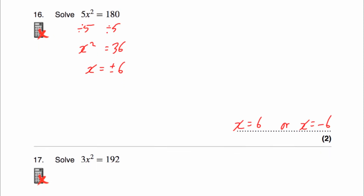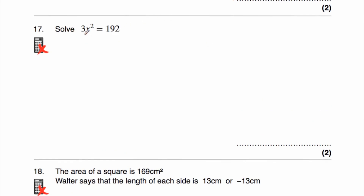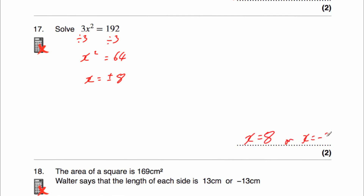Question 17 says solve 3x squared equals 192. We want to get x on its own, so divide both sides of the equation by 3. 3x squared divided by 3 is just x squared. On the right-hand side, 192 divided by 3 gives us 64. We're looking for a number squared to give us 64, so that's 8 or negative 8. So x equals plus or minus 8, so x equals 8 or x equals negative 8.